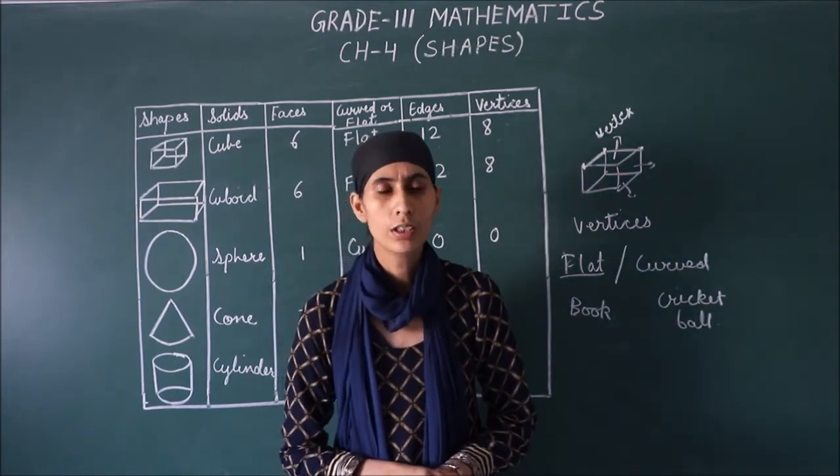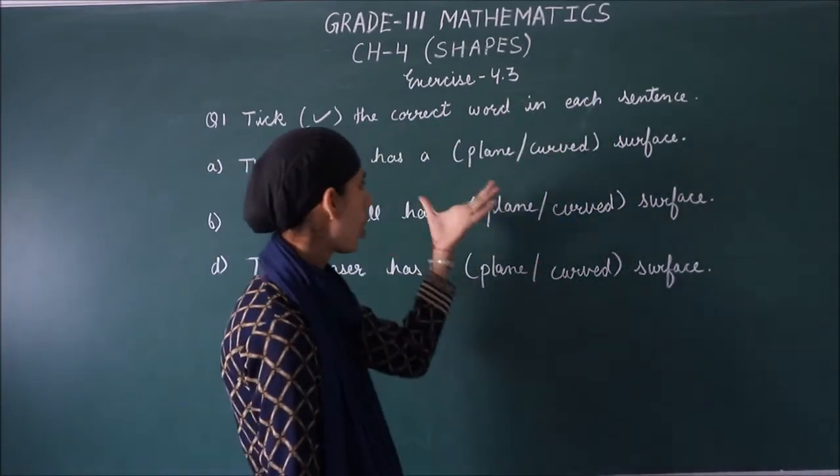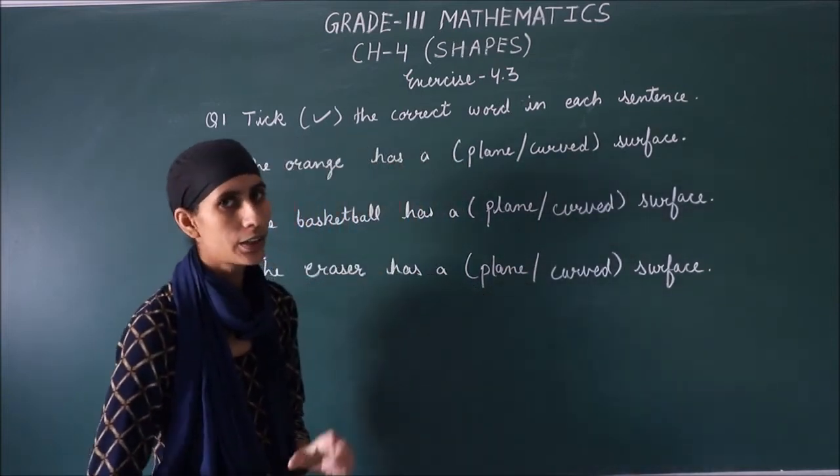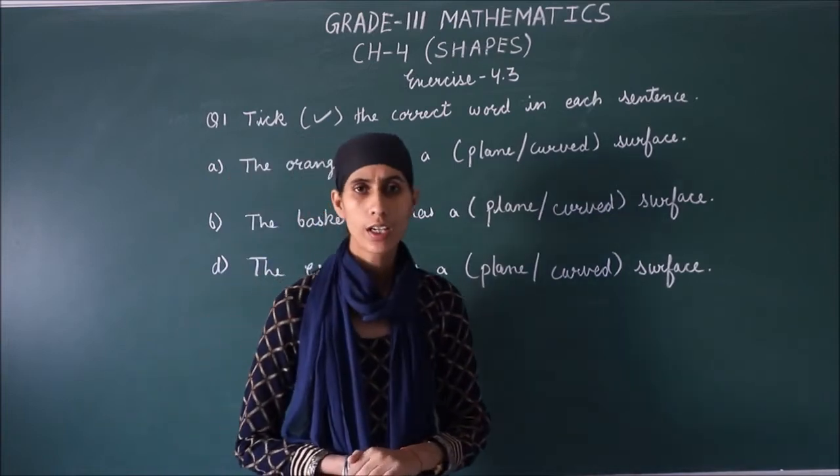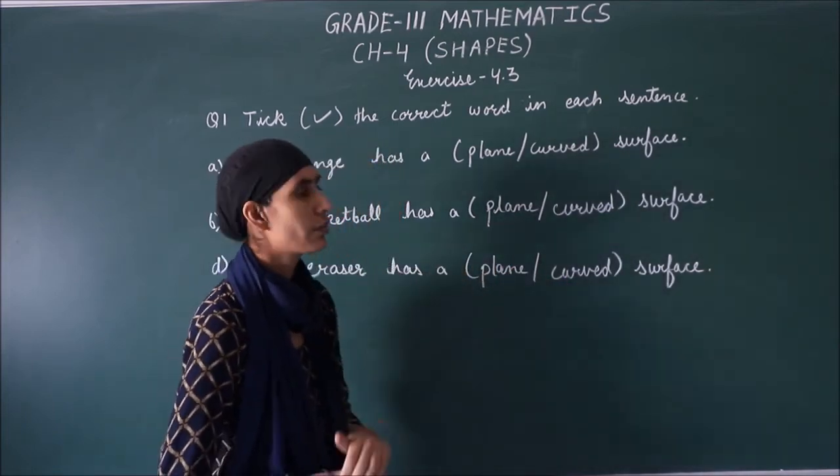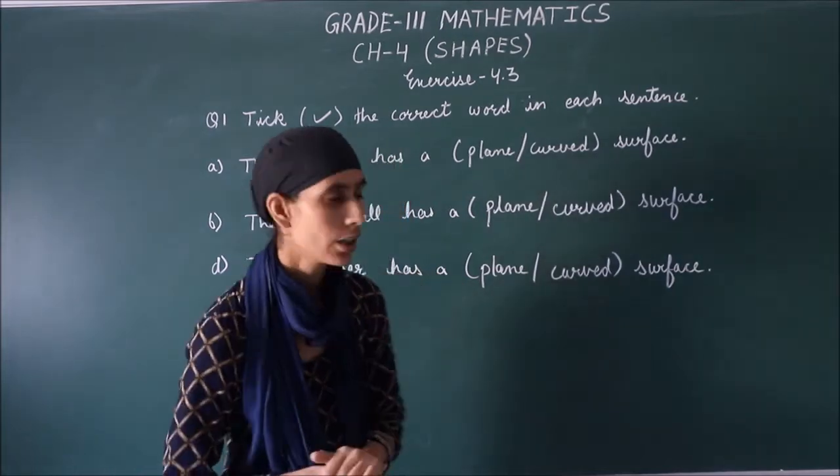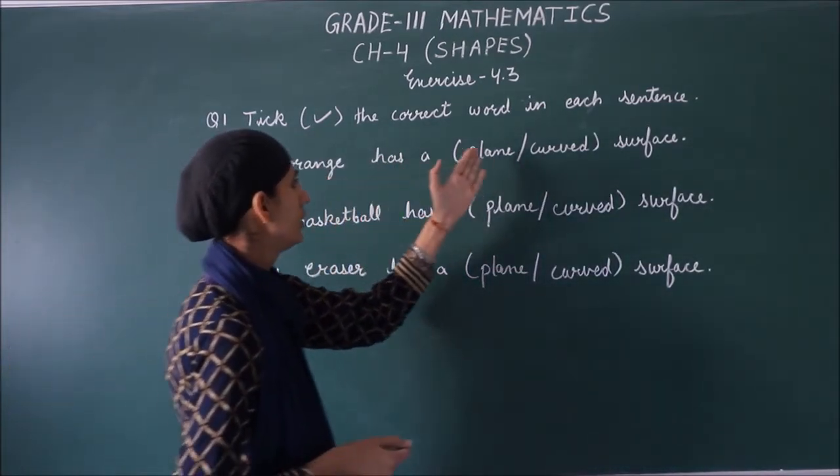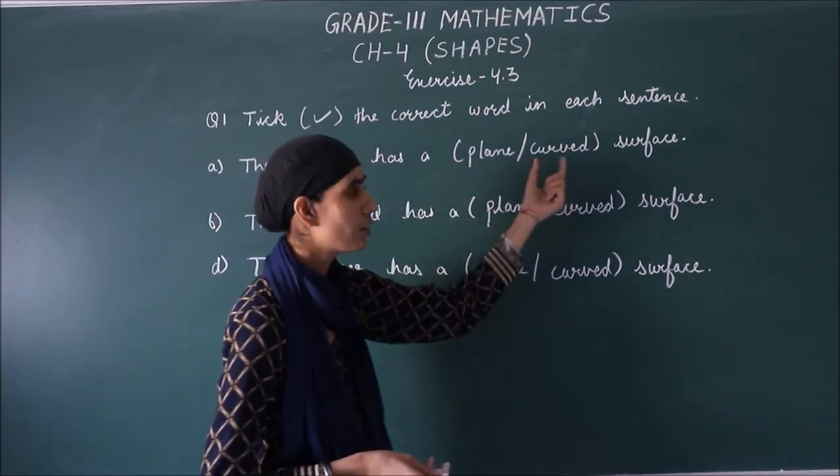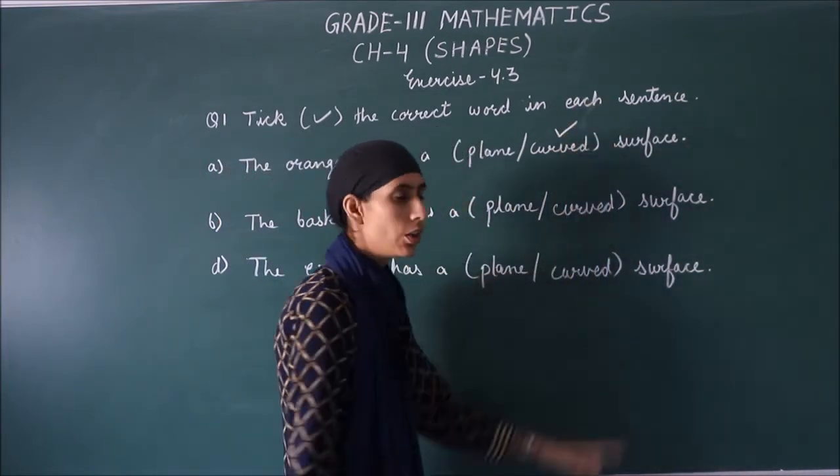Now, let's come to question number one. So your question number one is. Tick the correct word in each sentence. You have two options. Plane and curved. We have to tick the correct option. So now I have to tell you. Plane and curved surface. Plane surface. So you have this part. The orange has a plane or curved surface. So if we look at the shape of orange, then we see round shape. So at least, how is the surface? Curved. So curved, you'll click on that.